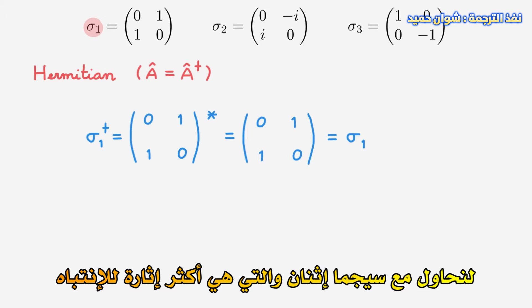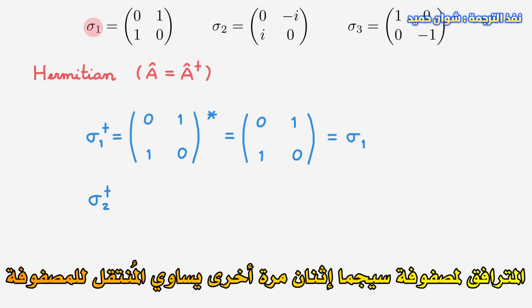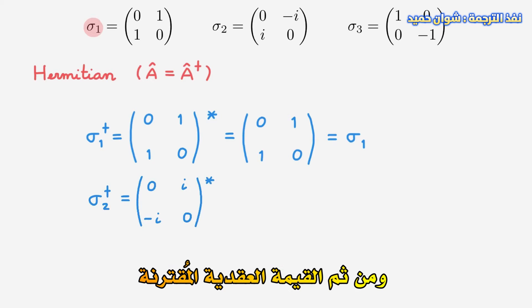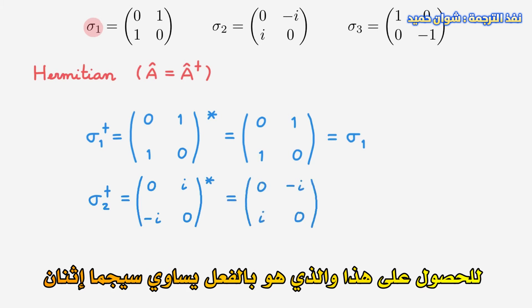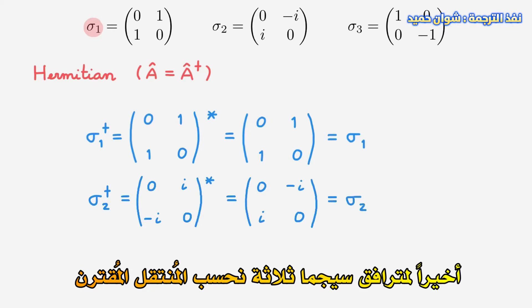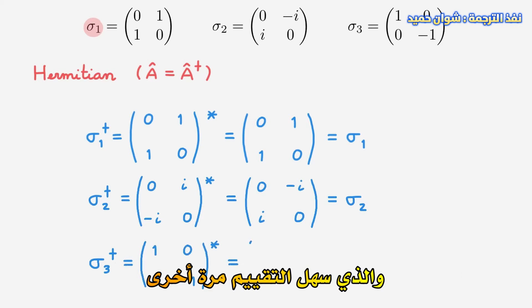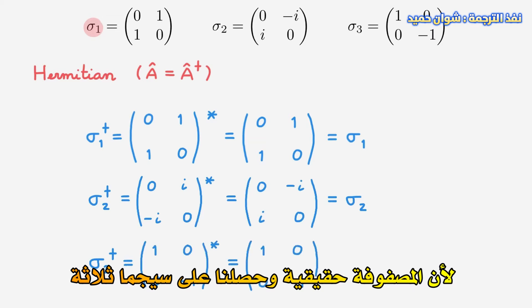Let's try sigma-2, which is slightly more interesting. The adjoint of sigma-2 is again equal to the transpose of the matrix, and then the complex conjugate, which flips the signs of the imaginary terms, and we get a result which is indeed equal to sigma-2. Finally, for the adjoint of sigma-3, we calculate the transpose conjugate, which is once again trivial to evaluate as the matrix is real, and we get sigma-3.